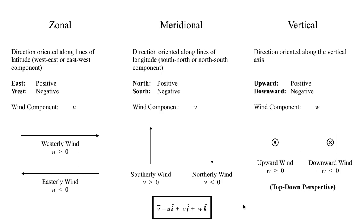That's going to do it for this segment on the meteorological coordinate system and the conventions that go along with it, especially as they pertain to the wind field. In the next segment, we'll talk about the gradient vector and review how that works. I will see you all in the next segment.